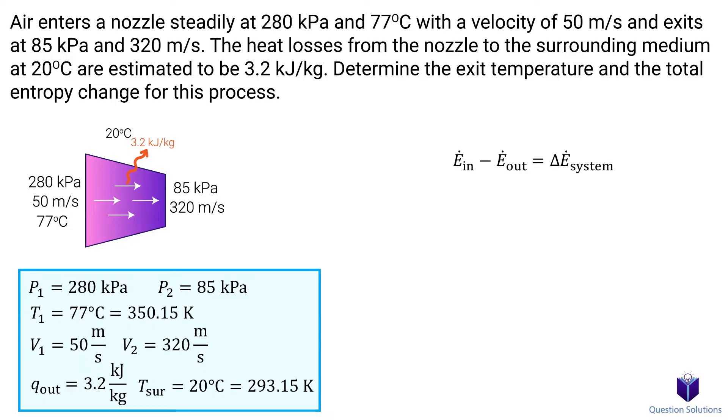Energy in minus energy out gives us the change in energy of our system. We will write this in rate form, so with a dot on top. Since we're told that this is a steady flow system, the change in energy of our system is zero. Let's rearrange the equation. Now you have to think back to what you learned about nozzles. What energy goes in and what energy goes out.